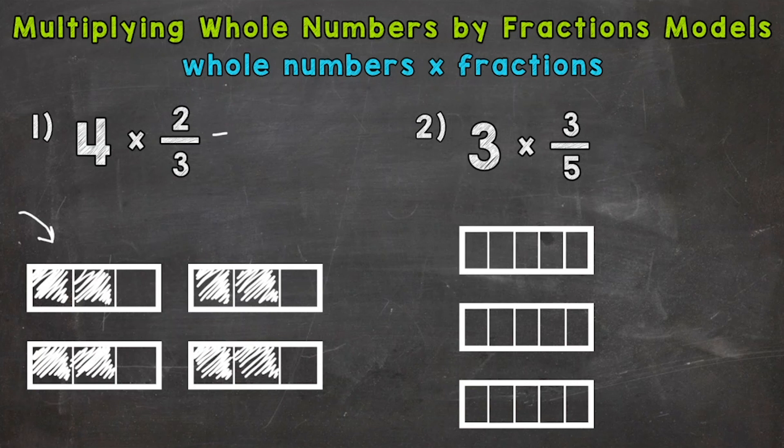Now let's see how many total thirds are filled in. So we have one, two, three, four, five, six, seven, eight-thirds filled in. So that's going to be our numerator, eight.